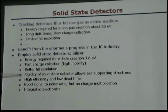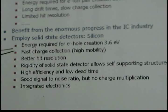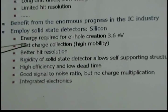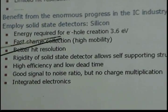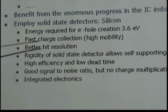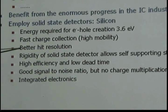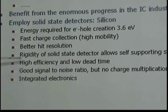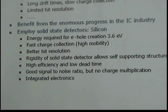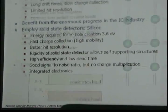So what are the advantages of silicon? First of all, the energy required to ionize the medium is very small — 3.6 electron volts. It's very fast, has much better resolution, it's rigid, and all of that.